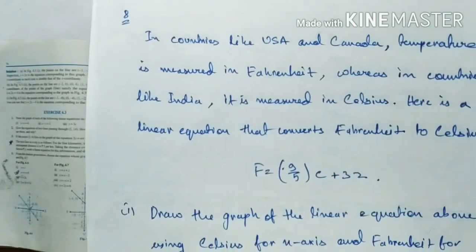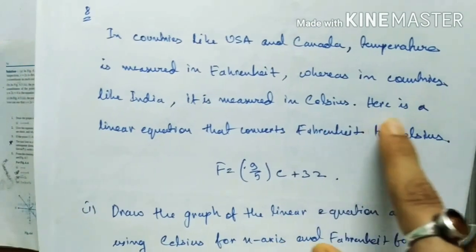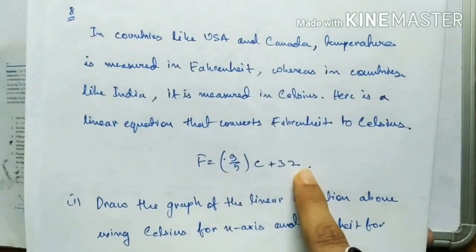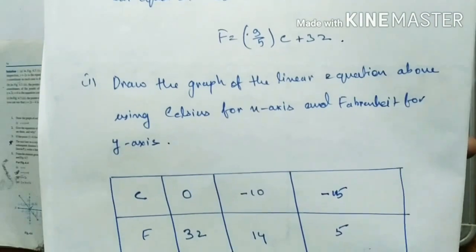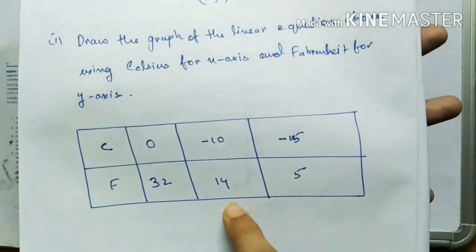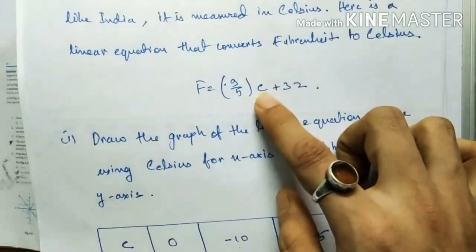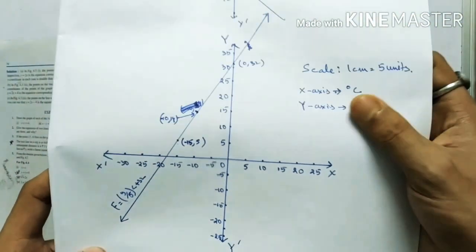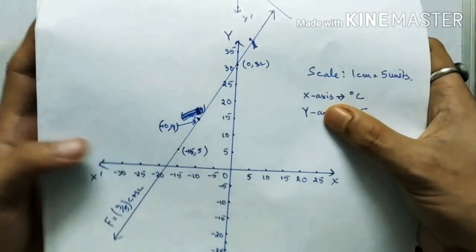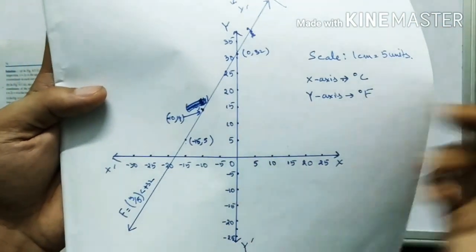Question Number 8: in countries like USA and Canada temperature is measured in Fahrenheit, while in India it is measured in Celsius. A linear equation converts Fahrenheit to Celsius. Draw the graph using Celsius on the x-axis and Fahrenheit on the y-axis. Table of values: C=0 gives F=32; C=minus10 gives F=14; C=minus15 gives F=5. Plot and draw the graph.